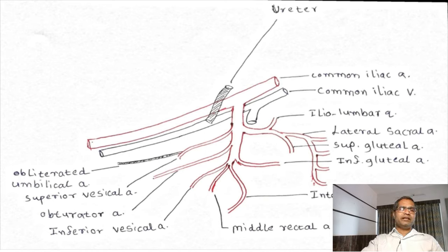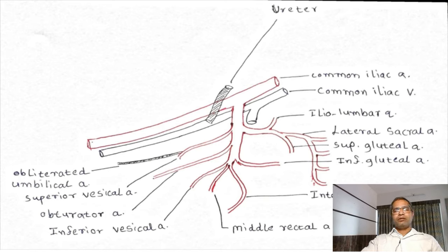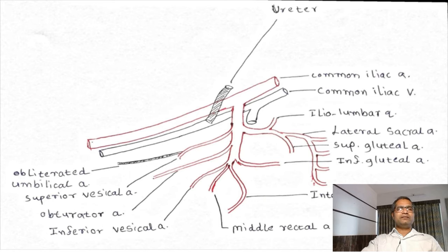The next one is obturator artery. This obturator artery is present in relation with the lateral wall of the pelvis, and it passes through the obturator canal for its exit outside the pelvic cavity. Inside the pelvic cavity, it will give out small branches which will supply the bladder, urethra, and also small branches to other organs present in the pelvic cavity.